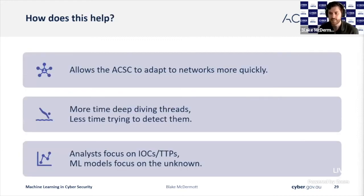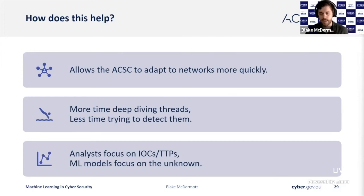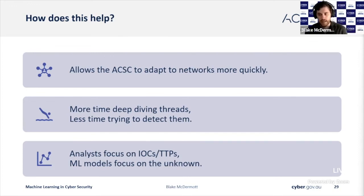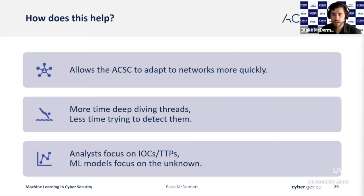But how does this help the ACSC and you? It can help the ACSC skip the baselining of a network by automatically ignoring the benign. This gives our analysts more time to deep dive in the areas that they need it, rather than checking every nook and cranny. This also gives our analysts the opportunity to spend time on an IOCs and TTPs approach, so they can target what they look for while the machine learning looks for the unknown.